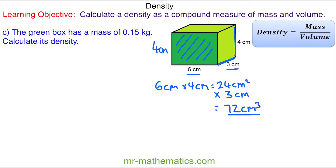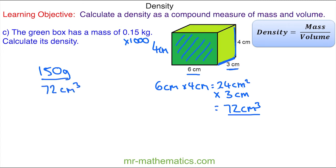We can now work out the density. The mass is 0.15 kilograms, which we convert to 150 grams by multiplying by 1000. So density equals 150 grams divided by 72 centimeters cubed, which is approximately 2.1 grams per centimeter cubed.